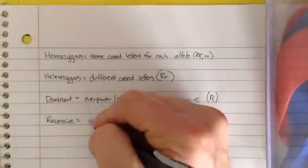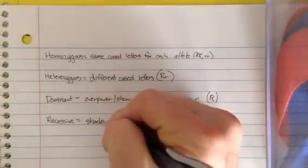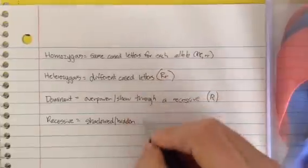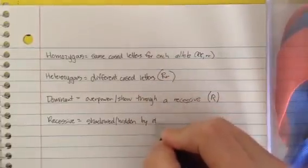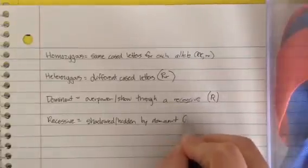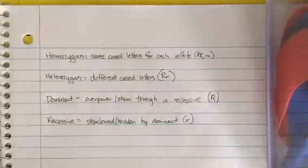Recessive means that these will be shadowed or hidden by dominant allele. And so we write them as a small letter R for recessive characteristic.